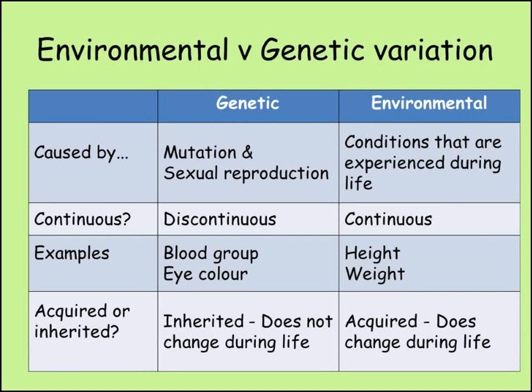In summary, all individuals, even those within the same species, show variation. This variation can be genetic, in which case it is caused by different alleles of the same gene. The variation will be discontinuous, as individuals will have one of a fixed number of possible phenotypes, depending on which alleles they have for that gene. This variation is caused by mutation and sexual reproduction, and it is inherited.